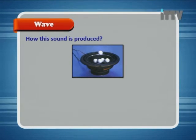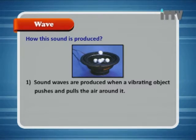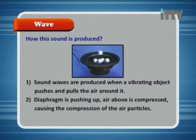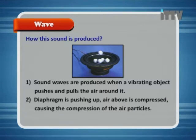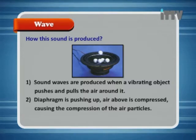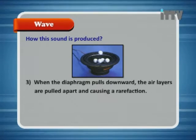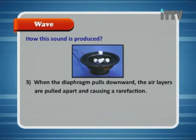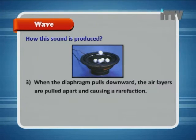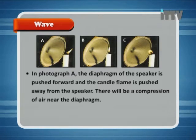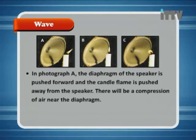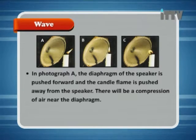How is this sound produced? Sound waves are produced when a vibrating object pushes and pulls the air particles around it. When the diaphragm of the speaker pushes up, the air above is compressed, causing compression of air particles. When the diaphragm pulls down, the air layers are pulled apart, causing rarefaction. In diagram A, the diaphragm of the speaker is pushed forward and the candle flame is pushed away from the speaker. There will be a compression of air near the diaphragm.